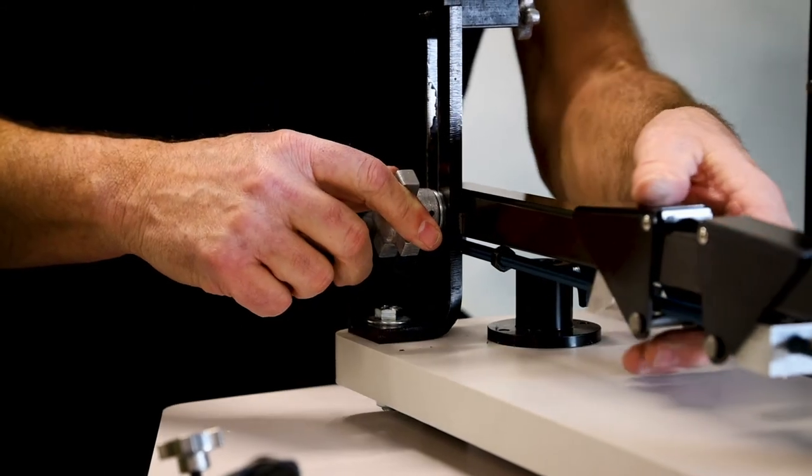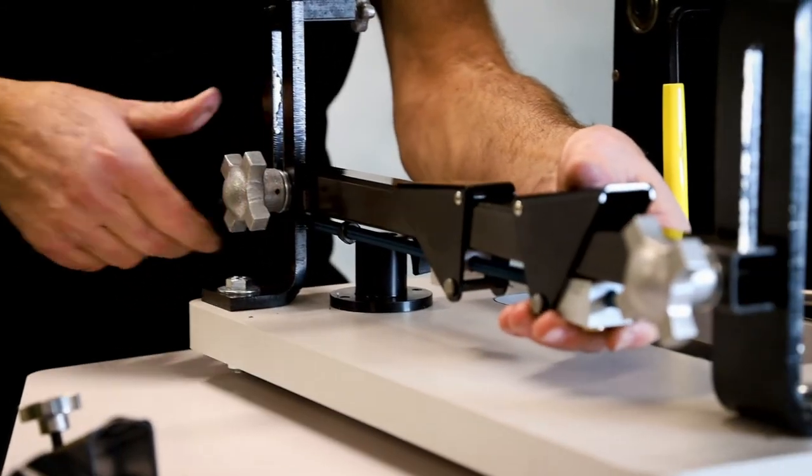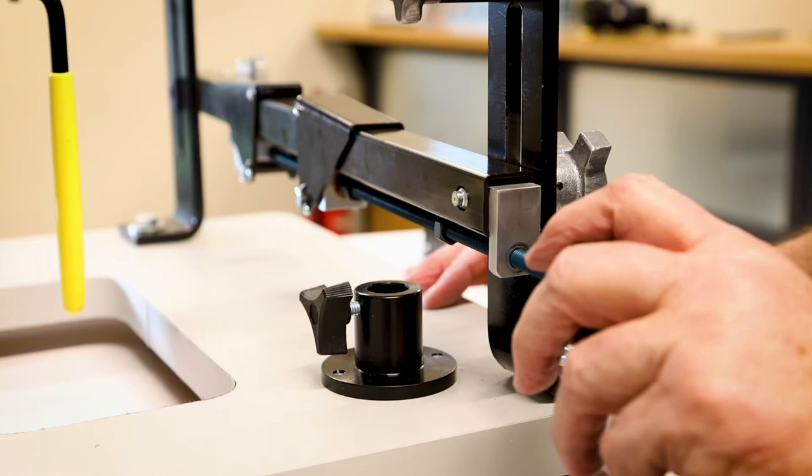You're all set. Mount your reel the way you would with the old clamps. Be sure not to over tighten the clamps.